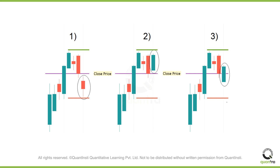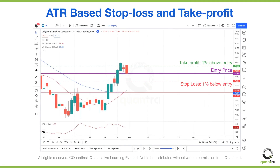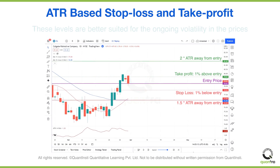The reason why we use a multiple of the ATR value is to leave some additional buffer from this expected range, so as to avoid unnecessary triggering of our exit levels. For example, here we can place the stop loss at 1.5 times the ATR value away from our entry price, and similarly, we can place our take profit at 2 times the ATR value from the entry price. Notice how these exit levels are better suited for the ongoing volatility in the prices, as compared to the fixed percentage approach.